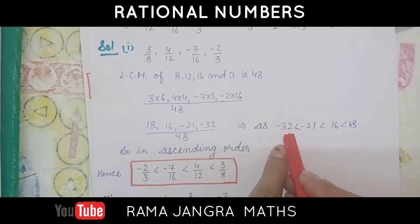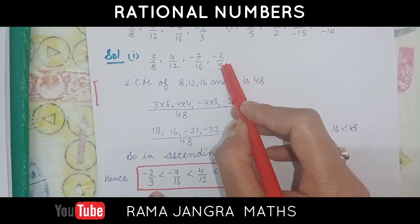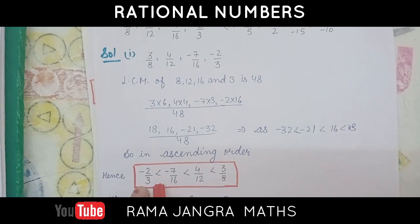So, minus 32. Minus 32. Yeah, this is the last one. Last one, what do we have? Minus 2 by 3. So, it is minus 2 by 3.